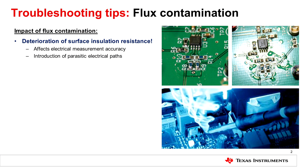Before we begin, let's talk about how to look for flux on a board and what it is. Flux can impact an application in various different ways. Some examples can be effects on electrical measurement accuracy. This can occur due to the introduction of various different parasitic electric paths created by the flux.